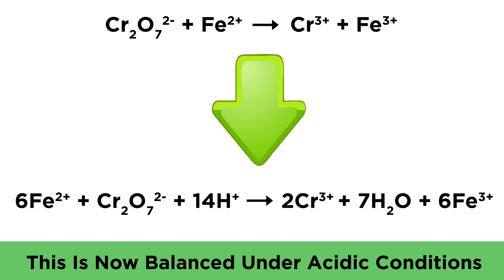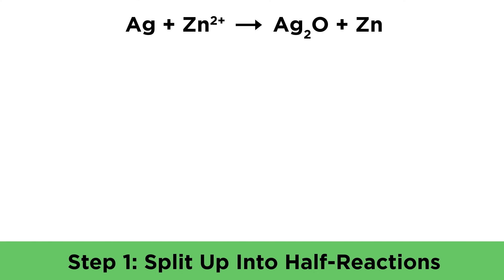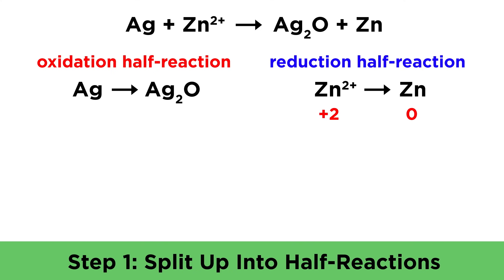Let's say we have some solid silver reacting with zinc two plus to become silver oxide and solid zinc. Again we will start by separating this into half reactions. Silver has been oxidized, going from zero to plus one, and zinc has been reduced, going from plus two to zero.